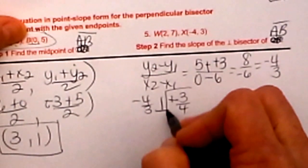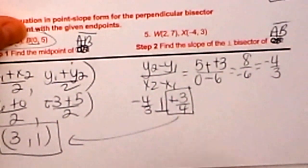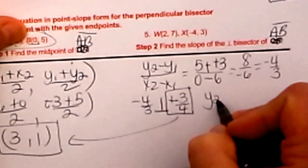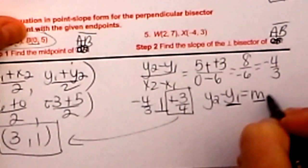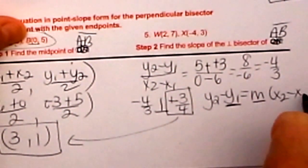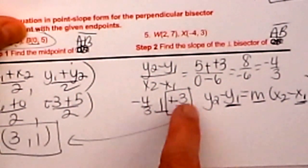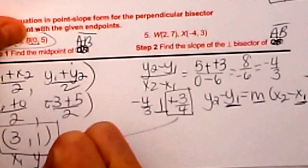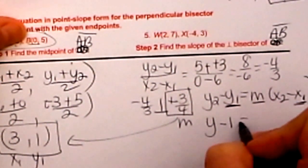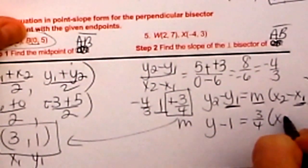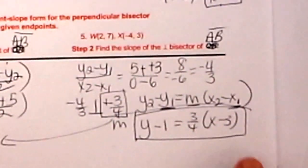Now let's take this new slope that's perpendicular to AB and the midpoint we found, and put them together in the point-slope formula. The point-slope formula is y minus y1 equals m times (x minus x1), where we plug in the midpoint for x1 and y1, and our slope for m. So y minus 1 equals three fourths times (x minus 3). And there is the equation of the perpendicular bisector. That's how you do it.